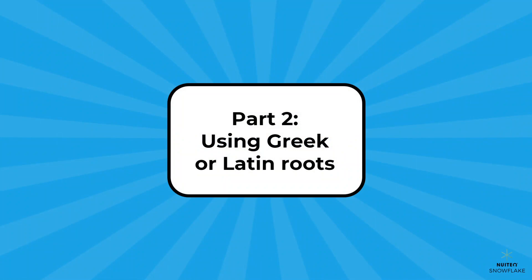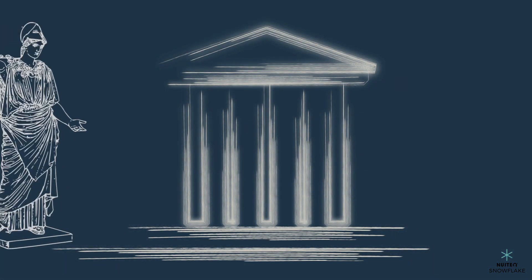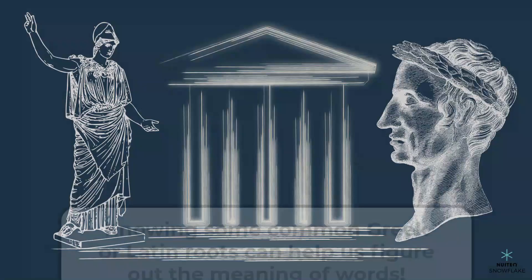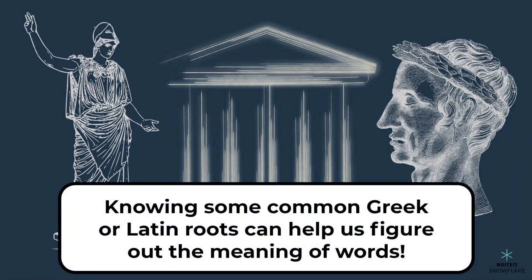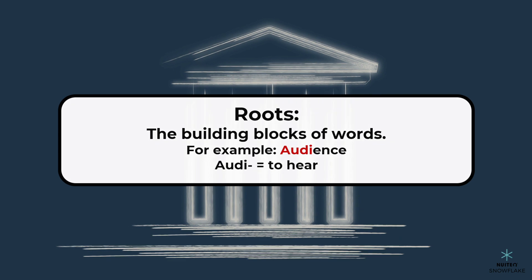Part 2: Using Greek or Latin Roots. Greek and Latin are ancient languages that have influenced many of the words we use today. If you know some common Greek and Latin roots, you can figure out what many words mean just by looking at them. Roots are like the building blocks of words and they can help us understand what a word means. For example, the word audience has the Latin root 'audi,' which means to hear. Let's check out some more examples.